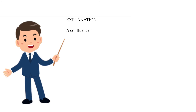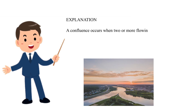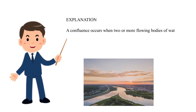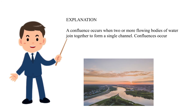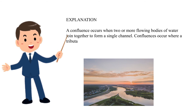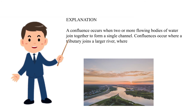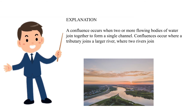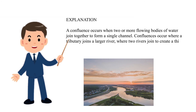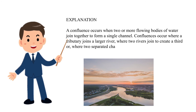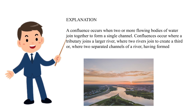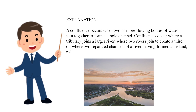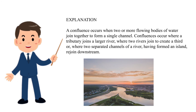Explanation. A confluence occurs when two or more flowing bodies of water join together to form a single channel. Confluences occur where a tributary joins a larger river, where two rivers join to create a third, or where two separated channels of a river, having formed an island, rejoin downstream.